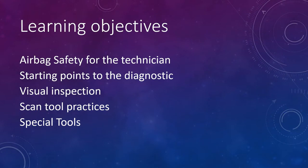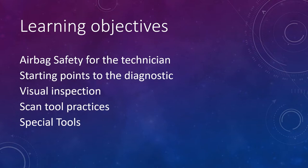Learning objectives: first is airbag safety for the technician — very important. Then starting points for the diagnostic, where I'll teach you where I start and how I do things. We'll cover visual inspection, including tips on going through the history of the vehicle. Scan tool practices — how to use PID data and stay on the right track. And finally, I'll go over a special tool we use to emulate the airbag during diagnosis.